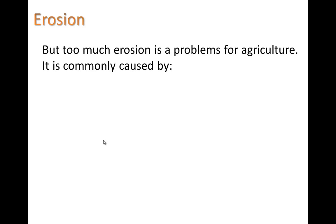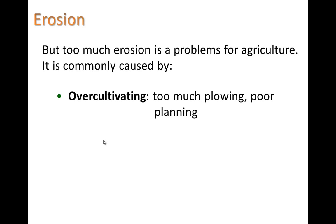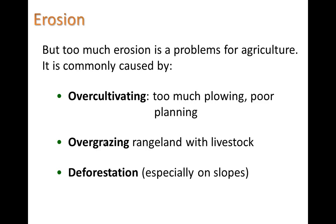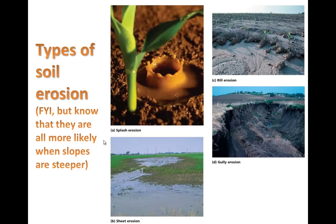The other side of erosion is that too much erosion is a problem for agriculture. It is commonly caused by over-cultivating — meaning too much plowing or poor planting. Plowing means taking dirt and topsoil and flipping it over, basically, putting weeds underneath the ground to make them die. Overgrazing means ranged land with livestock eating up too much vegetation. Deforestation, especially on slopes, is also a cause. In all these cases, we're removing vegetation, which is important for giving structure to the soil — roots help hold the soil in place.